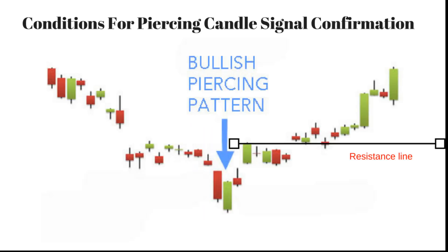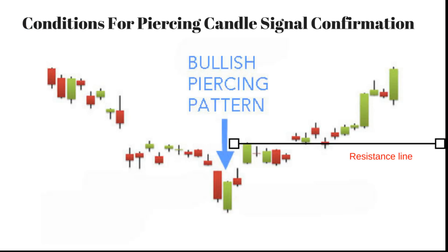Conditions for piercing pattern signal confirmation — first condition: it should be formed after a downtrend. Second condition: a bearish candlestick followed by a bullish candlestick, and the close of that bullish candlestick should be at the middle of the bearish candle. Third condition: traders should wait for the market to break the nearest resistance level; once the market breaks it the next day, then go for long.